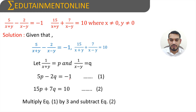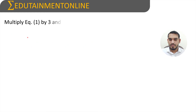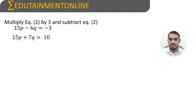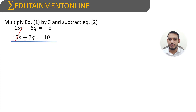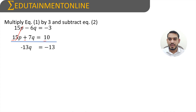Multiplying equation 1 by 3 and subtracting from equation 2: 15p minus 15p is 0, and negative 6q minus 7q gives minus 13q, and minus 3 minus 10 is minus 13. So minus 13q equals minus 13, therefore q equals 1.